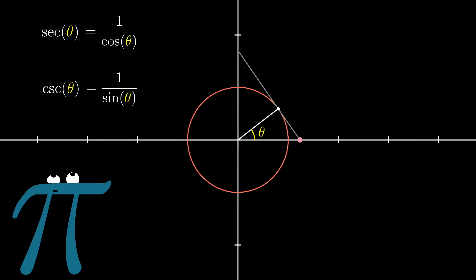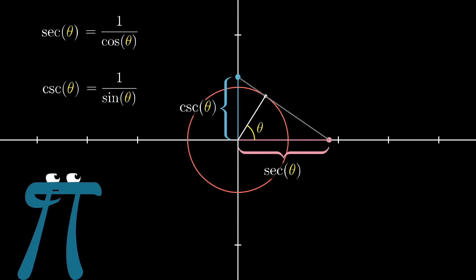If you look at that point where this tangent line crosses the x-axis, the distance from that point to the origin is the secant of the angle, that is, 1 divided by the cosine. Likewise, the distance between where this tangent line crosses the y-axis and the origin is the cosecant of the angle, that is, 1 divided by the sine.